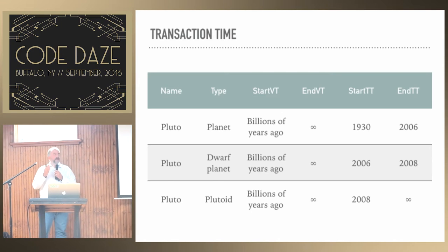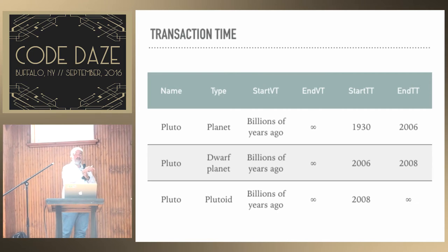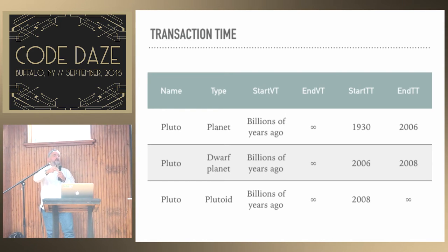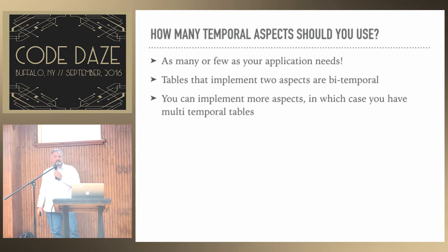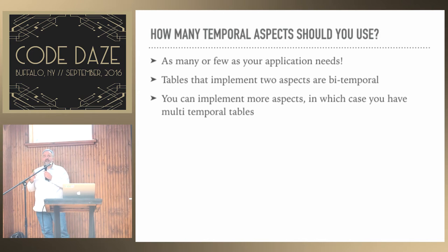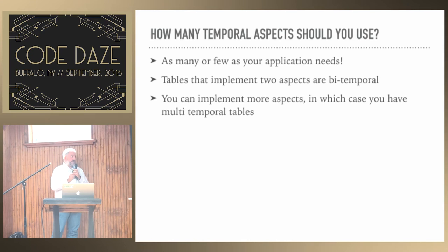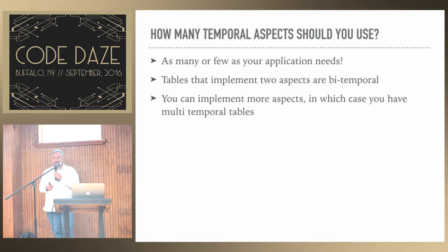How many temporal aspects should you use? As many or as few as your application needs. A table with a single temporal aspect is called temporal; two is bi-temporal; three is multi-temporal. The thing to bear in mind is that each temporal aspect you track multiplies the complexity of your data model considerably. If you're dealing with valid time and transaction time, you have an awful lot of extra complexity to manage.